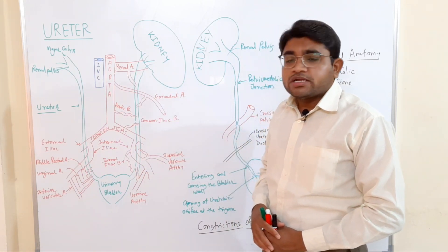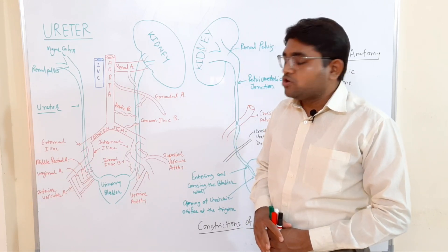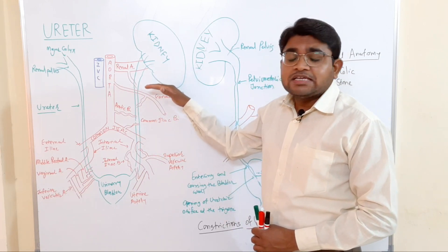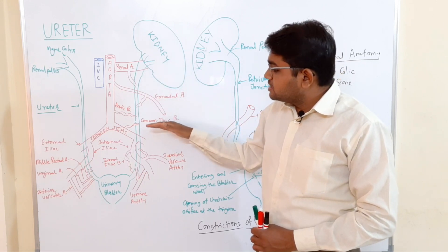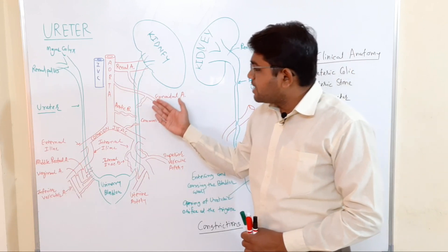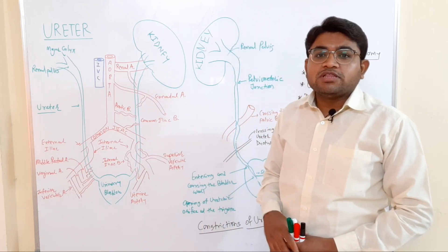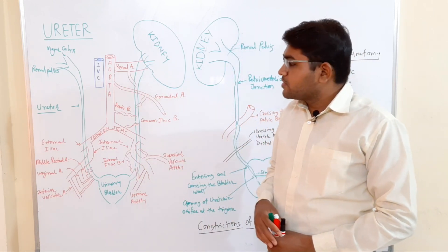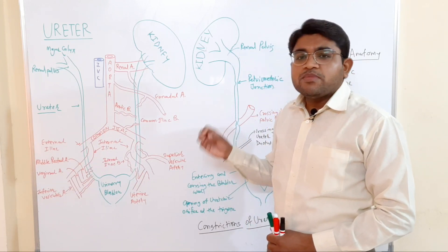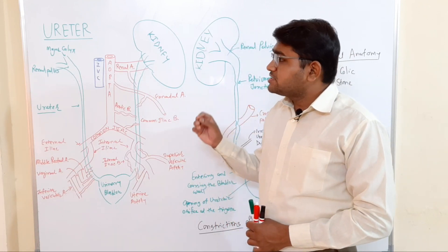The dimensions of the ureter: it is about 25 centimeters long — that is 10 inches. It has two parts: the upper half lies in the abdominal cavity and the lower half lies in the pelvic cavity. The abdominal part lies on the posterior abdominal wall and the pelvic part lies on the lateral pelvic wall. The diameter is about 3 millimeters.